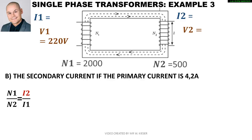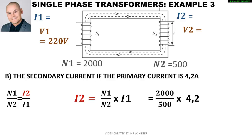To calculate the secondary current if the primary current is 4.2 amps: working with the known values of the number of turns, and remembering I2 is on top so N1 and N2 remain in the same position. N1 is 2,000, N2 is 500, multiplied by the primary current of 4.2 amps. That gives us a secondary current of 16.8 amps.